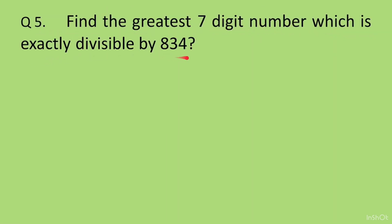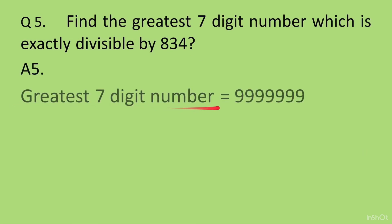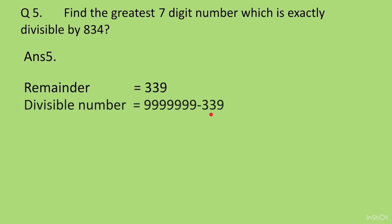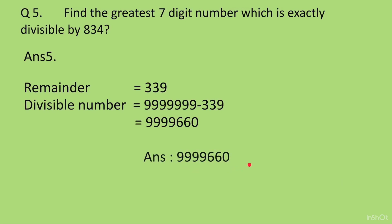Question 5. Find the greatest 7-digit number which is exactly divisible by 834. We write the greatest 7-digit number: 9999999. Then we divide by 834. The quotient is 11990, but what matters is the remainder, which is 339. To get the divisible number, subtract 339 from 9999999: 9999999 minus 339 gives us 9999660. This is the number exactly divisible by 834 — when you divide 9999660 by 834, the remainder is 0. Answer: 9999660.